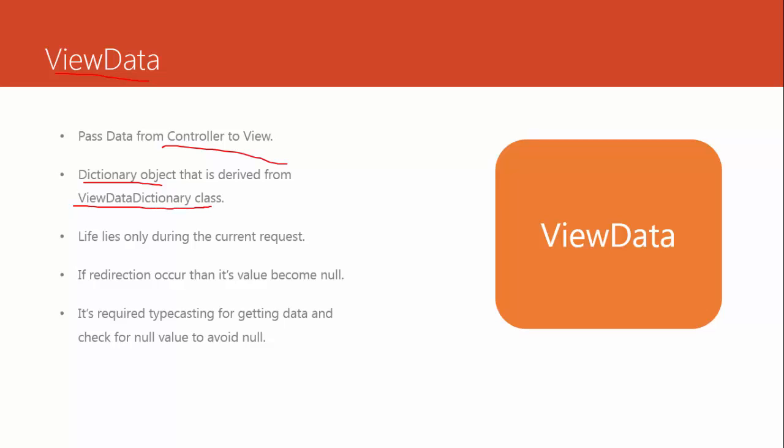Its life lies only during the current request, not for subsequent requests. That means you use ViewData only once, and if you reload the page or resend the request, the ViewData value will become null. However, there are various ways to persist the data which we will look at in future videos. For now, just understand that its life lies only during the current request, and if a redirection occurs, its value becomes null.